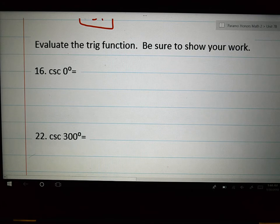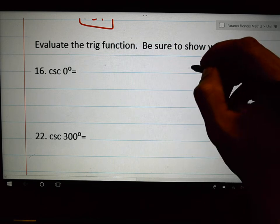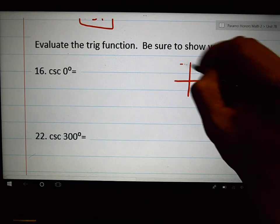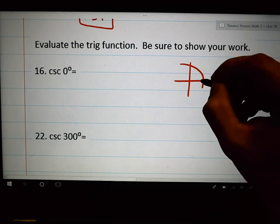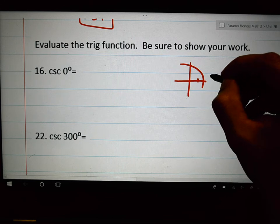My other two examples I've decided to do for you or with you is 16 and 22. First one says, what's the cosecant of zero degrees? I'm going to draw just a very quick unit circle over here. I'm going to put zero degrees right there and I'm going to put the ordered pair, which is this ordered pair.